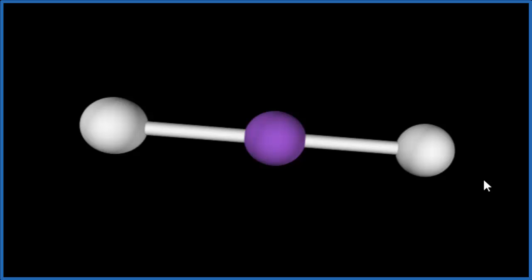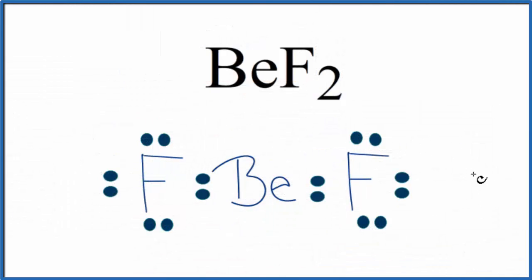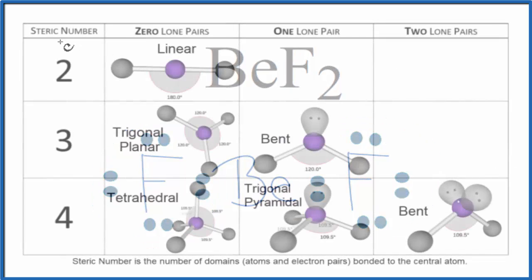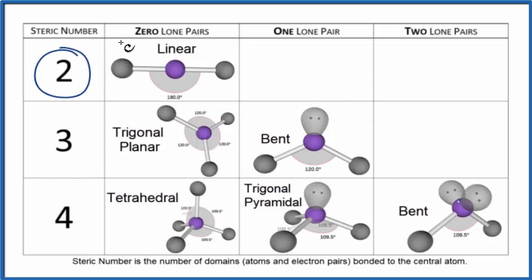Let's go back to our Lewis structure. So back at our Lewis structure, if we couldn't visualize this, we could also look at the steric number. So we have two things attached, two atoms, and we don't have any lone pairs. So if we look at a table here, we have a steric number of two and zero lone pairs. That means we have a linear molecular geometry with a bond angle of 180 degrees.